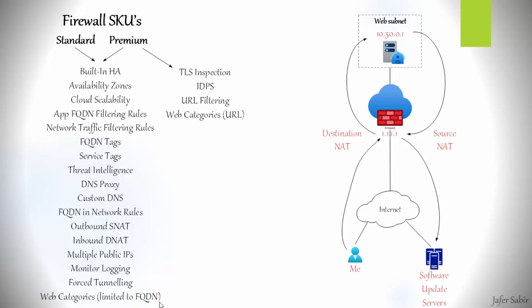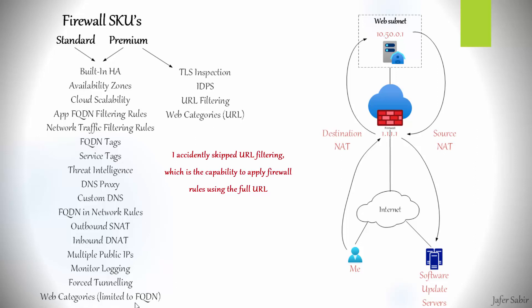Azure Firewall Premium includes TLS inspection, which decrypts outbound traffic, scans and inspects the data, then re-encrypts and forwards it. It supports outbound and east-west TLS connections; inbound TLS inspection is not supported on the firewall — for that, use Azure Application Gateway, a Layer 7 load balancer with built-in web application firewall. Premium also includes a signature-based intrusion detection and prevention system (IDPS) that detects malicious activity and can log, report, and block it, applicable to inbound, east-west, and outbound traffic. Web categories on premium can inspect full URLs such as bbc.com/weather, extending beyond just the domain name.